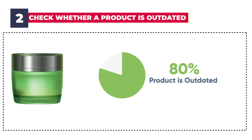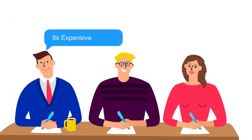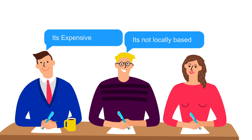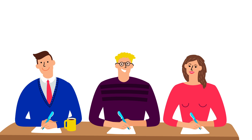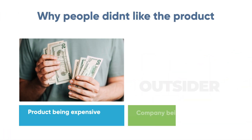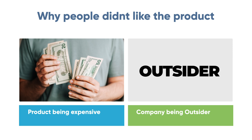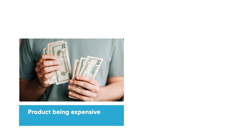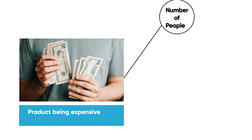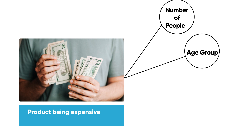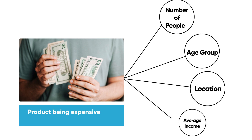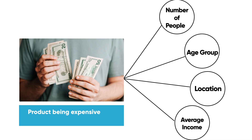Let's go back to our previous example of the product and look at some of the answers we received in our survey. Many participants said they don't like this product anymore because the product is expensive, while other participants said they don't like this product because the company is not locally based. Now we have found two distinct patterns: one being the product is expensive, and the other being the company is an outsider. We can start asking further questions such as how many people think that the product is expensive, what is the age group, where do they live, and what is their average income. There are a lot of things which are debatable here. However, if we can back them up with proper evidence, then we can come up with a solid conclusion.